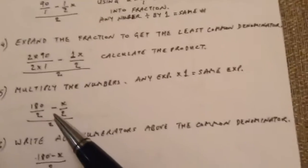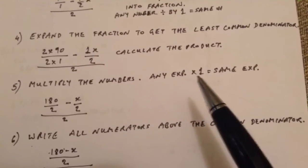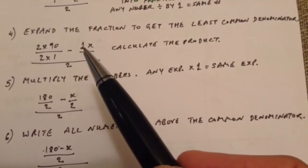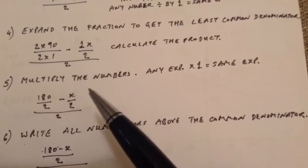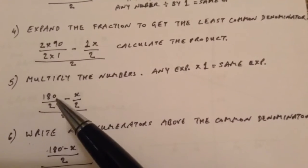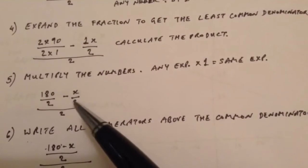So here we get, multiply the numbers. Any expression times 1 is the same expression. 1 times x is x. So here we have x. So 90 times 2 is 180 and 2 times 1 is 2. So we have 180 over 2 minus x over 2.